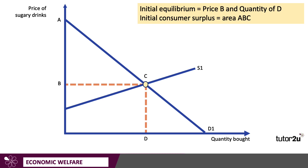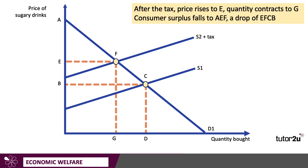Consumer surplus is the area underneath the demand curve and above the price. Let's take the market for sugary drinks, where the price initially might be B, the quantity bought is D, and consumer surplus is the area A, B, C. Now, if we impose a tax on producers, that lifts the supply curve up by the amount of the tax, so the supply curve shifts to S2. Other things being the same, the price will go up to E from B and the quantity bought and sold will contract from D to G.